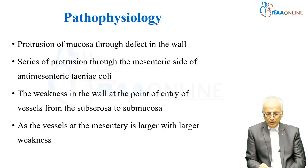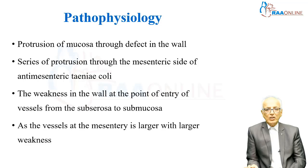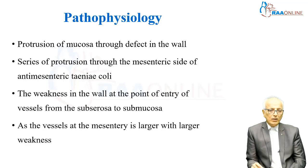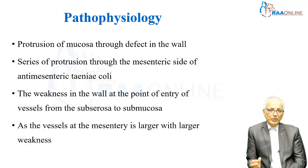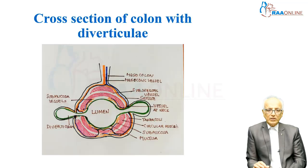As the vessels of the mesentery are larger, the weaknesses are larger. Surprisingly, the defect is most of the time on the mesenteric side of the anti-mesenteric taenia coli. The taenia coli — the bundles of longitudinal muscles of the colon — are three in number: one is on the mesenteric side and two are placed on either side of the anti-mesenteric line. This diverticulum happens on the mesenteric side of the anti-mesenteric taenia coli, as shown in this section.